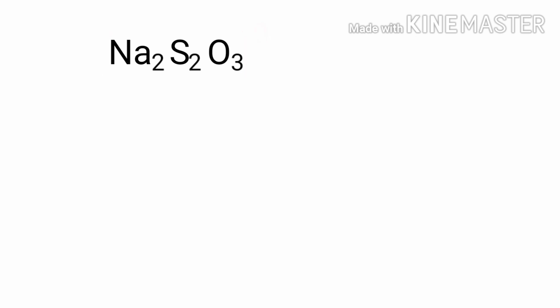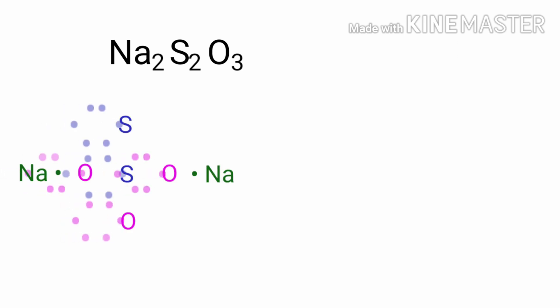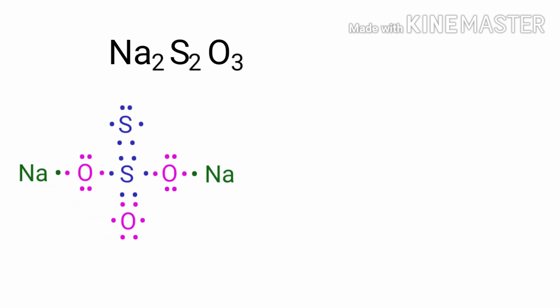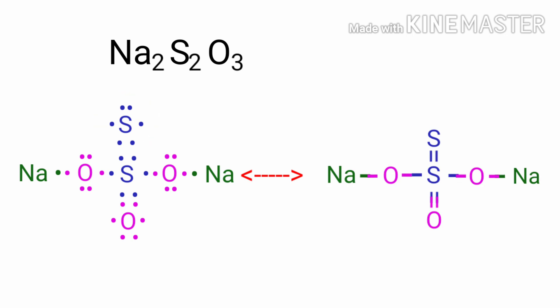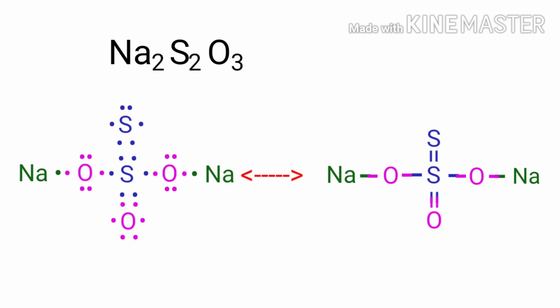Now we can draw the structure of sodium thiosulfate. Sulfur has six valence electrons. Oxygen has six valence electrons and sodium has one valence electron. In this formula, two sodium atoms, two sulfur atoms, and three oxygen atoms are present.